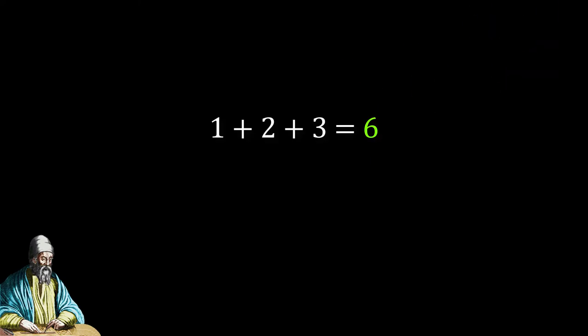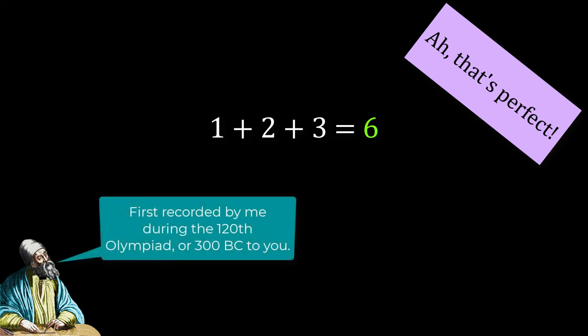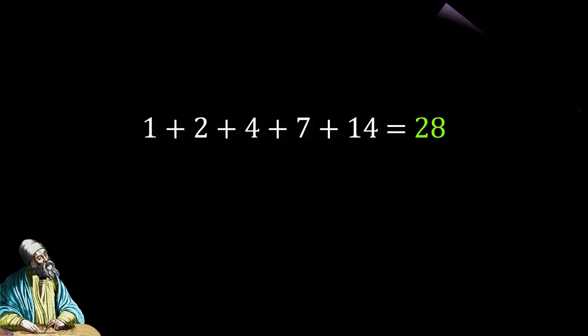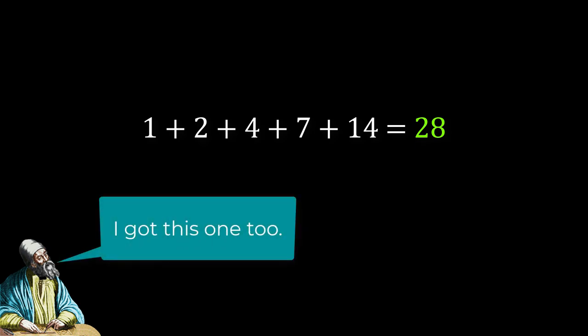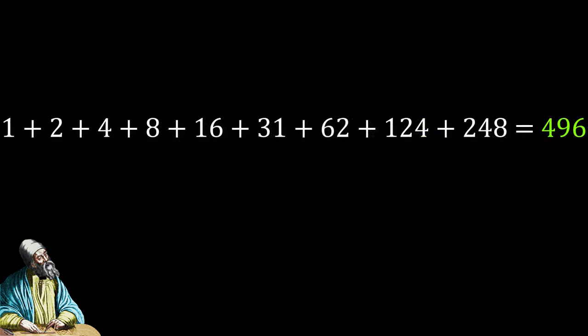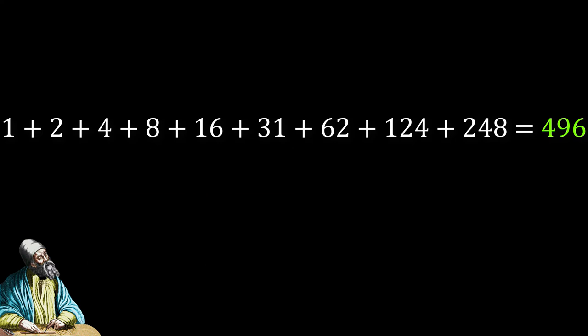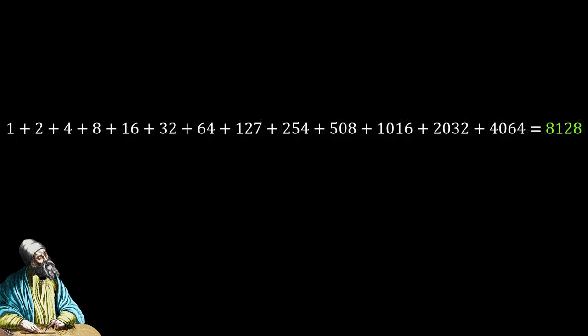6 is the smallest perfect number, meaning it can be made by summing its divisors. 28 is the next perfect number. Euclid recorded these results 2,300 years ago. Then comes 496. Did you get that one, Euclid? You wouldn't have got the next one though, 8,128.